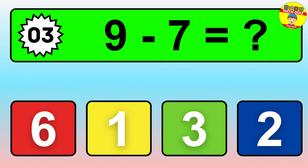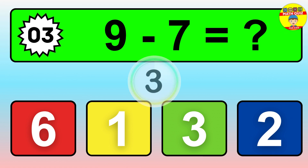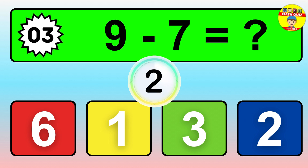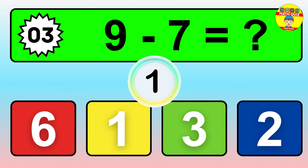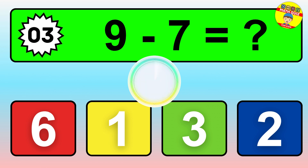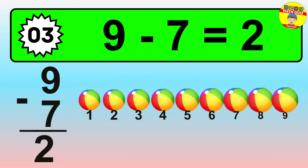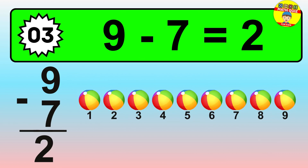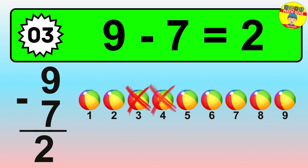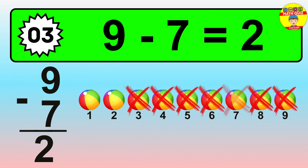Question three: nine minus seven equals what? So the answer is nine minus seven is two. Let's count it: one, two.